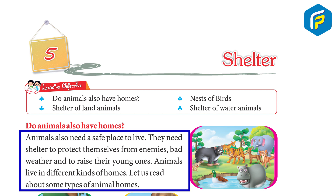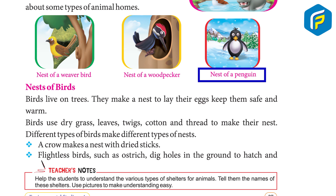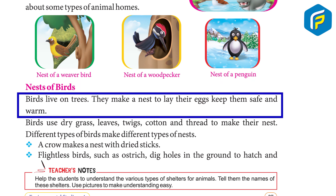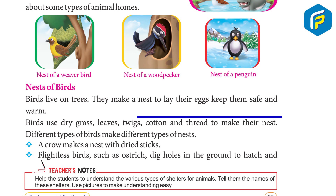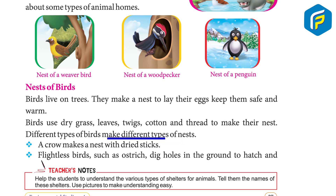Let us read about some types of animal homes: nest of a weaver bird, nest of a woodpecker, nest of a penguin. Birds live on trees. They make a nest to lay their eggs, keep them safe and warm. Birds use dry grass, leaves, twigs, cotton, and thread to make their nest. Different types of birds make different types of nests. A crow makes a nest with dried sticks.